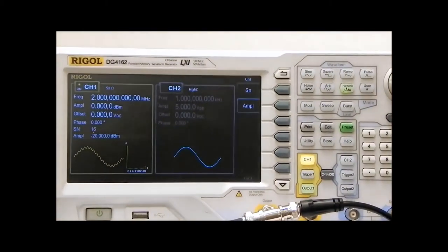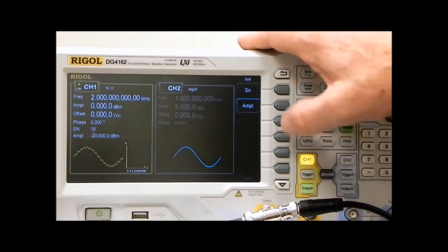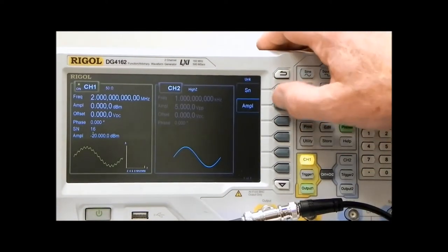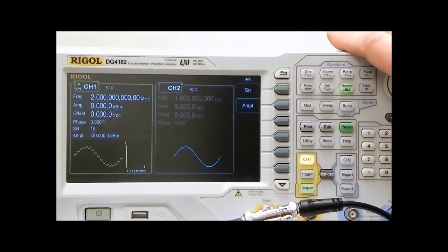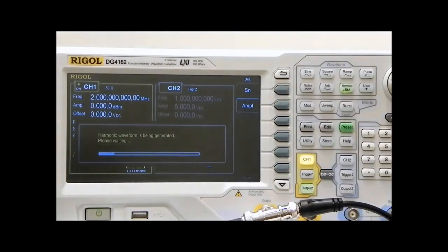And then I'm going to go back here and put the signal back. So simply by going into amplitude and then saying 0 dB, the waveform comes back.